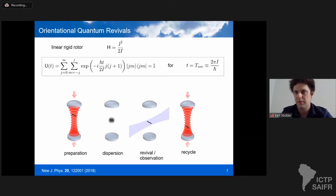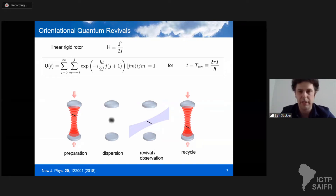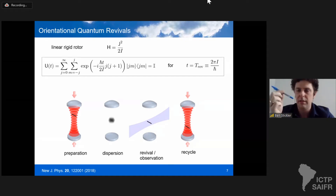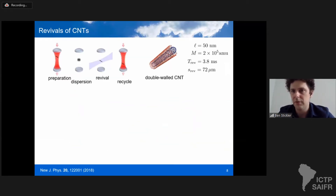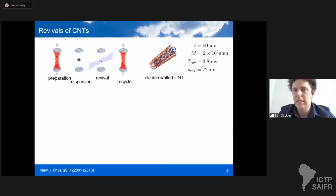This return of rotor orientation has been observed with small diatomic molecules and slightly larger objects, but not with nanoparticles. It could in principle be observed by scattering from a weak laser pulse, and then retrapping and recycling the rotor. The revival time is proportional to 1/ℏ, so it can get extremely large even for small objects — this pen here would have a revival timescale equal to the age of the universe squared. But scaling down to 50 nanometer length objects like double-wall carbon nanotubes, with mass about 2×10⁵ atomic mass units, the revival time can be on the order of milliseconds — within experimental reach.